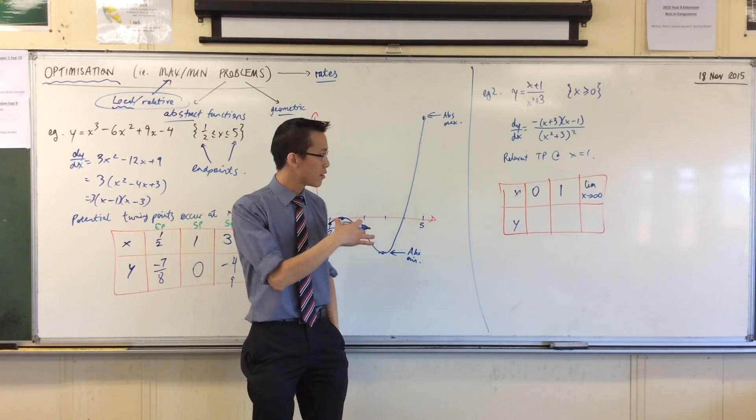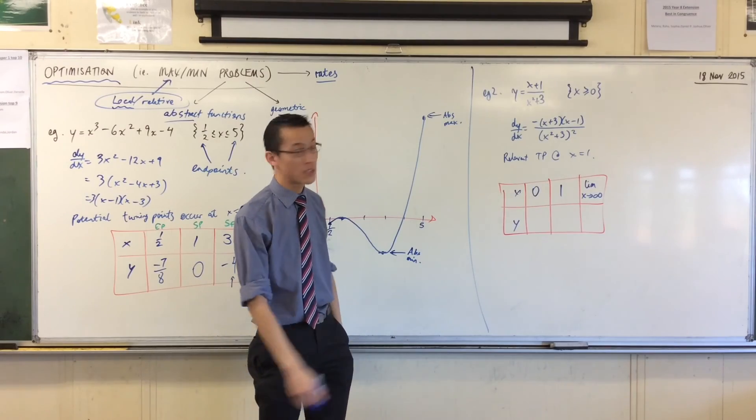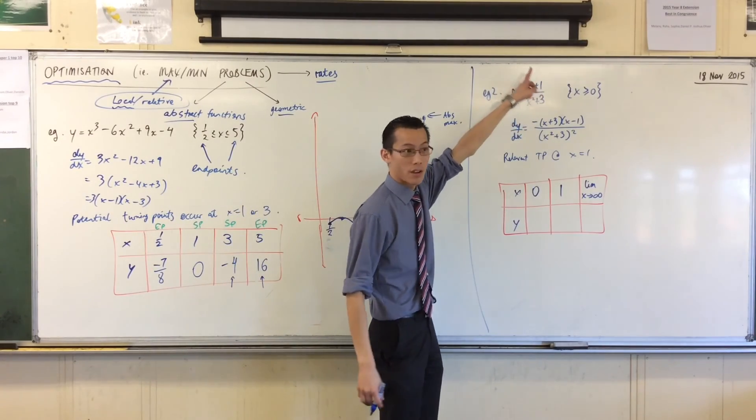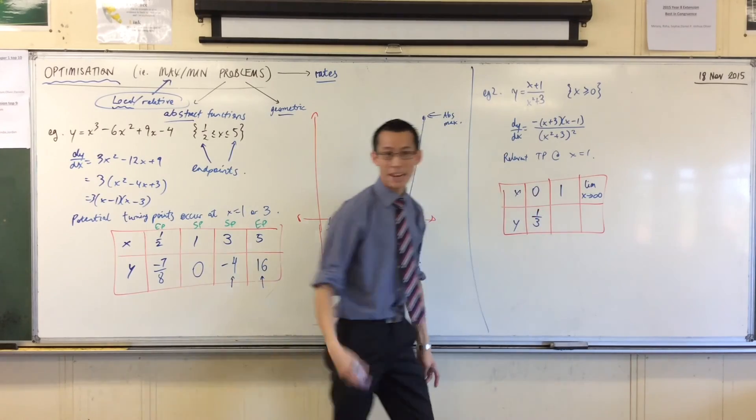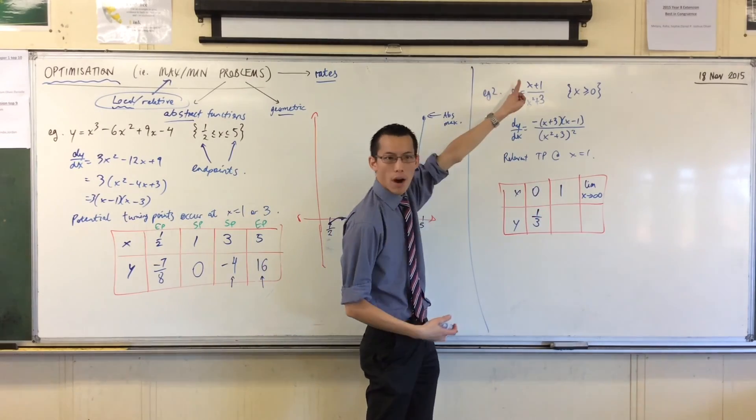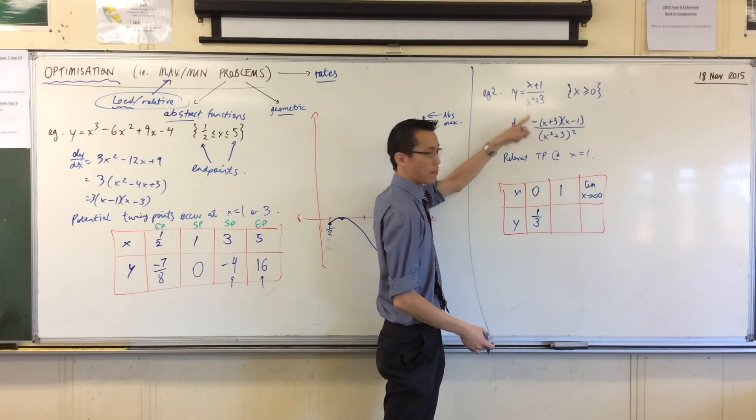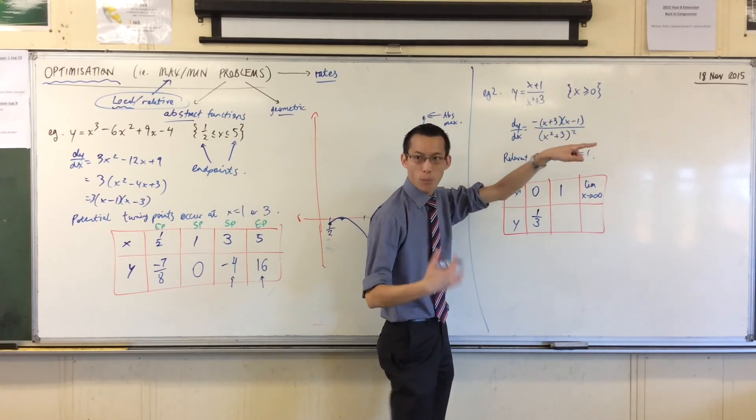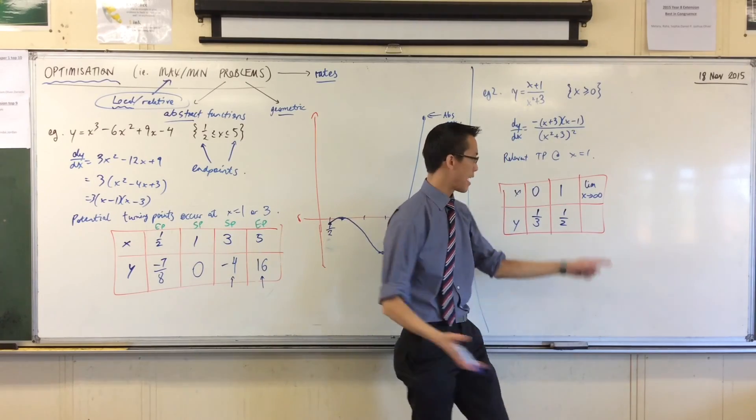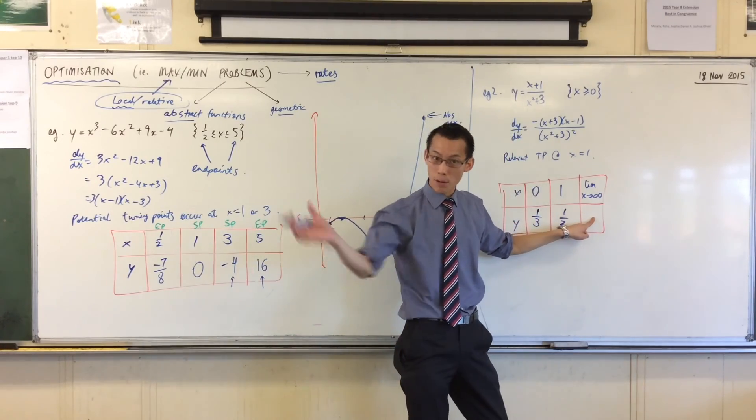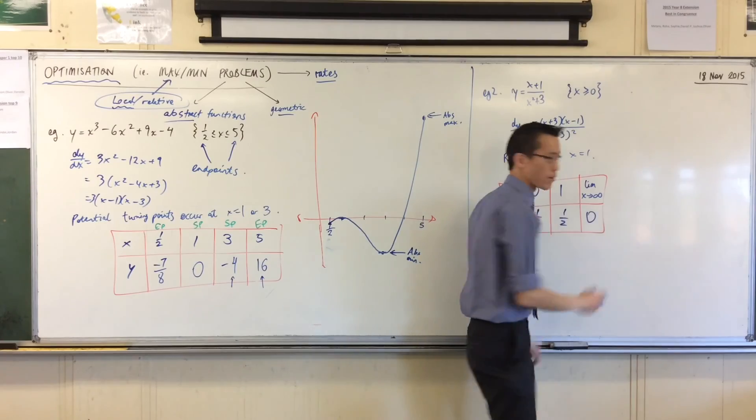Alright, so, some values. When I put x equals 0 in, just have a look at the numbers, x equals 0, that's 0, that's 0, it's a third. Again, because it's pretty simple, when you put in 1, you're getting 1 plus 1 and 1 plus 3, that's 2 over 4, which is a half. And you guys already told me that this limit, as I approach infinity, is 0.